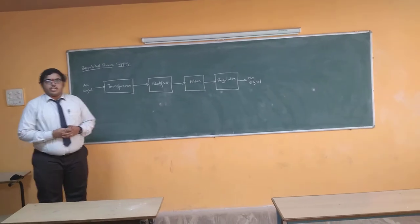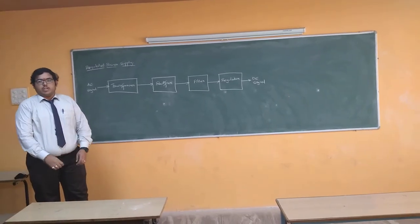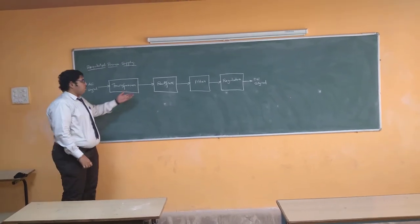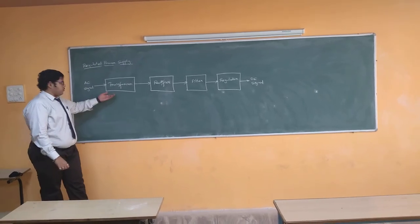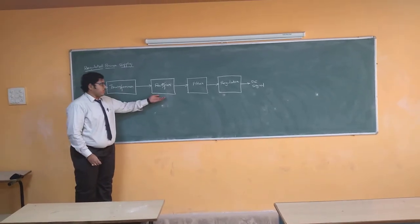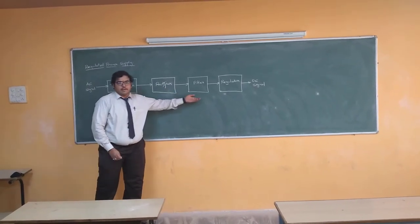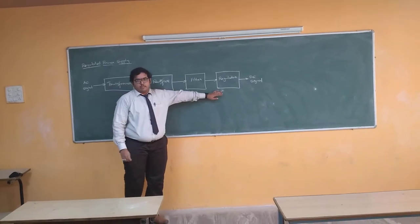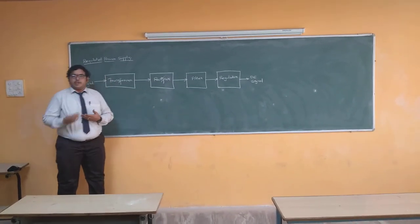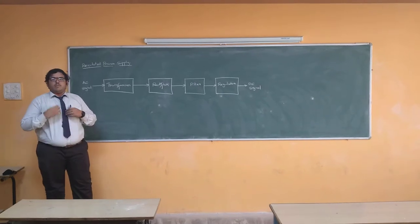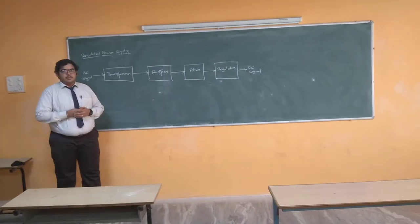This is the general block diagram representation of a regulated power supply. It consists of four different blocks: one is the transformer block, the second one is the rectifier block, the third is the filter block, and the last is the regulator block. Each and every block has its own different operation for converting the AC signal into a complete DC signal.